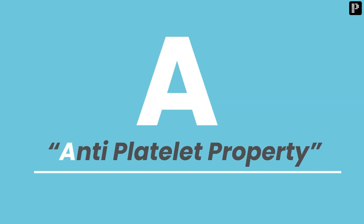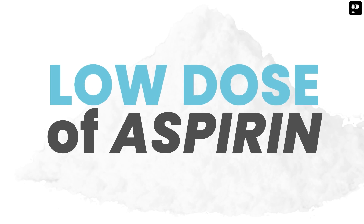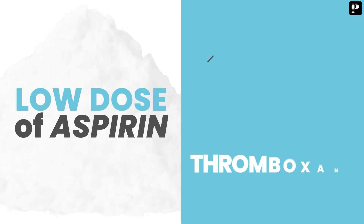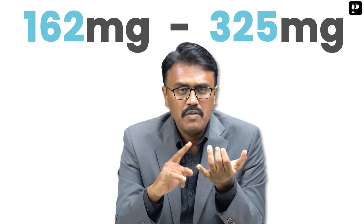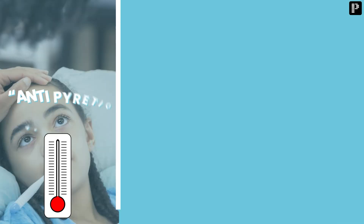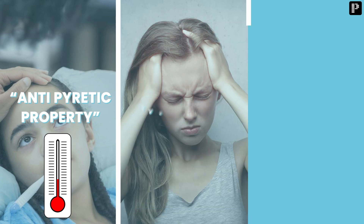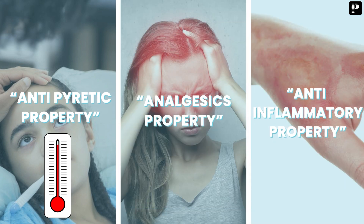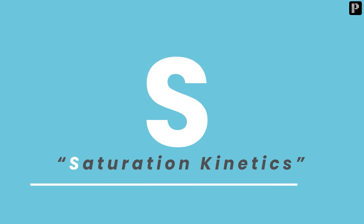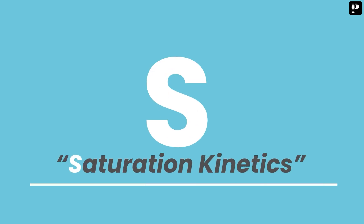The first letter A stands for anti-platelet property. We use a low dose of aspirin, which decreases thromboxane A2. In MI, the dose is around 162 to 325 mg. Along with that, aspirin has antipyretic property, analgesic property, and also anti-inflammatory property.